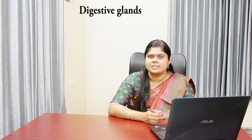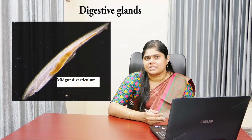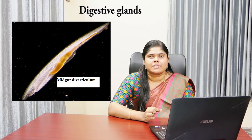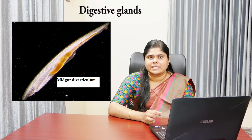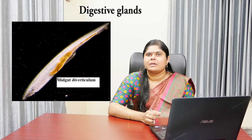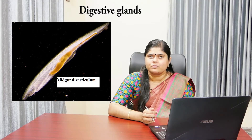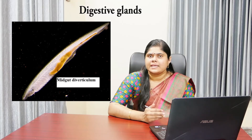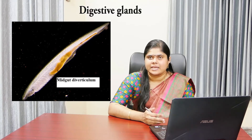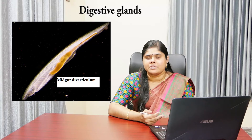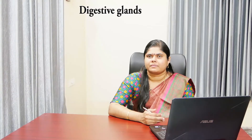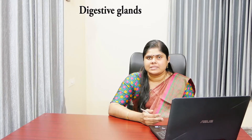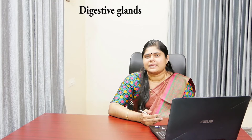Next are the digestive glands. The midgut diverticulum is the main digestive gland, and it arises as a blind pouch from the ventral side between the esophagus and the midgut, extending forward through the atrial cavity along the right side of the pharynx. Its inner lining has ciliated grooves for movement of food. The secretion of the midgut diverticulum contains digestive enzymes like amylase, lipase, and protease. The midgut diverticulum is also called the liver or hepatic caecum, but it does not resemble a liver in structure or function. Besides this, the epithelial lining of the intestine also contains numerous gland cells that secrete digestive enzymes.